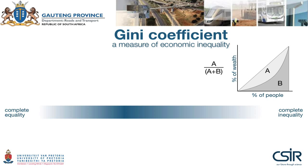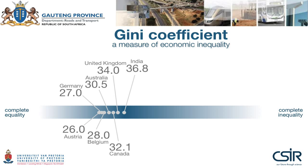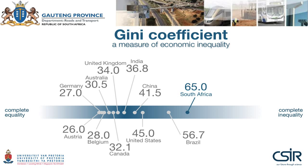So where do you think the different countries in the world lie? At around 26% we find Austria, Germany, Belgium, Australia, Canada, the UK, India and China. Note that the Gini coefficient does not give us any indication of the absolute wealth of a country, only the economic inequality. The United States sits at 45% — that is an average across all the states; in some cases it is as low as 30%, and in Atlanta it's 54–55%. Brazil and South Africa are among the highest — being economically unequal is unfortunately one of the things South Africa is best in the world at.